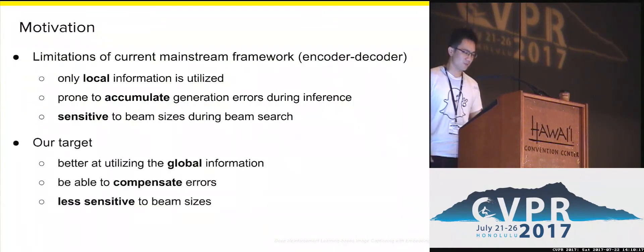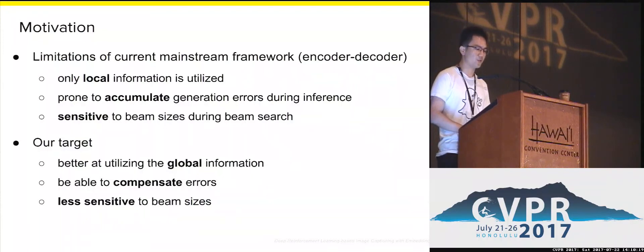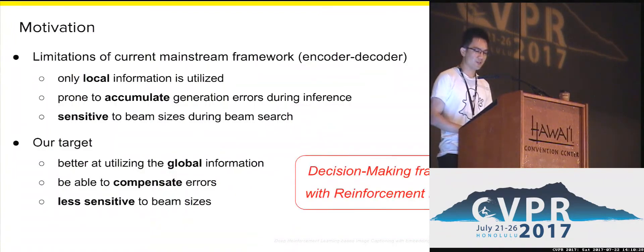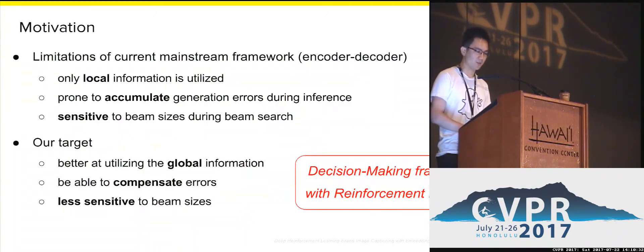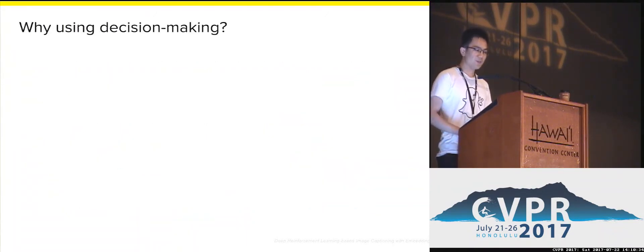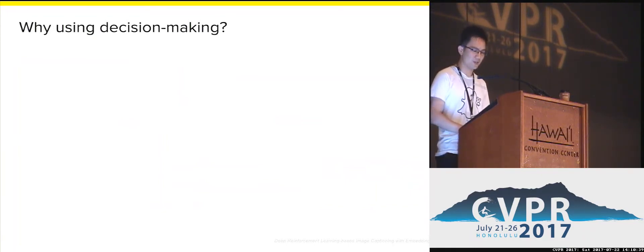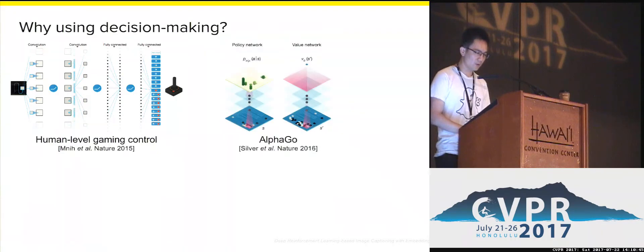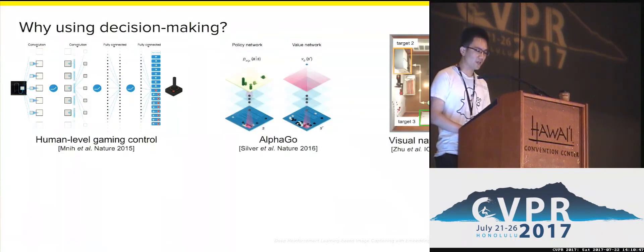Our target in this paper is a method that is better at capturing global information, able to compensate for errors, and less sensitive to beam sizes. To reach this target, we propose a decision-making framework with reinforcement learning for image captioning. Decision-making has been very effective and popular in gaming and control — well-known works include human-level game control, AlphaGo, and visual navigation.